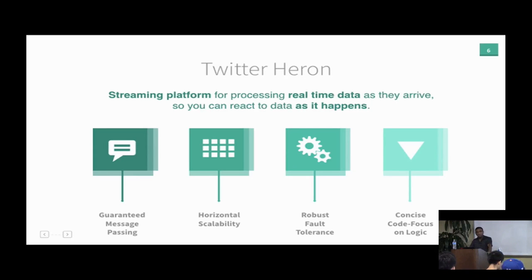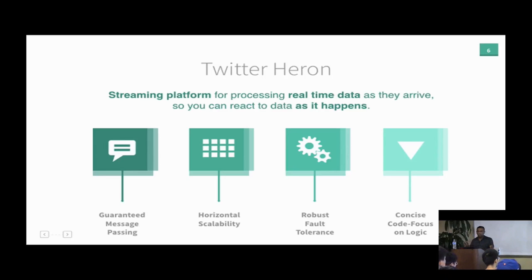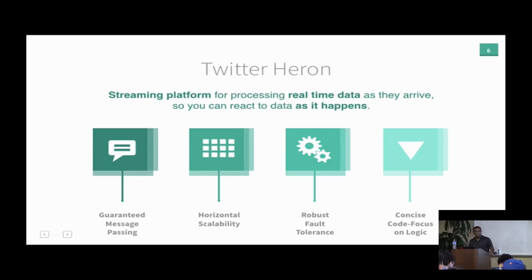Heron also provides scalability — by the time I left Twitter, Heron was running on over a thousand nodes. As capacity fills up, you just keep adding nodes and the software automatically spawns jobs on the new nodes. It has robust fault tolerance: in the presence of process or machine failures, the software keeps going without manual intervention. Finally, it supports expressing computations at multiple levels: low-level, functional, and declarative.